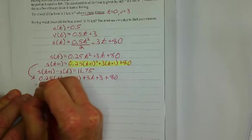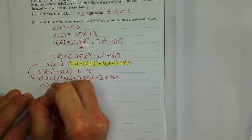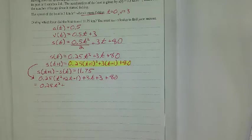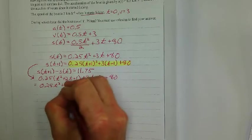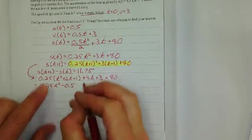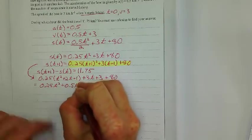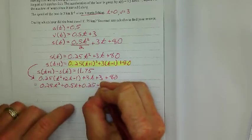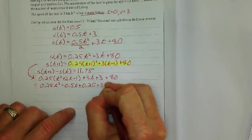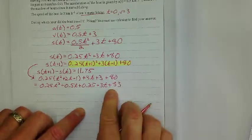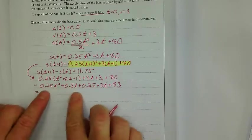Now, I'm going to distribute. I'm going to expand that through. And I get 0.25t squared plus 0.5. Wait, is that right? Yeah, a quarter times 2, yeah. So I get 0.5t plus 0.25. And then the rest of this plus 3t plus, and I'll just combine these right now and get 83.